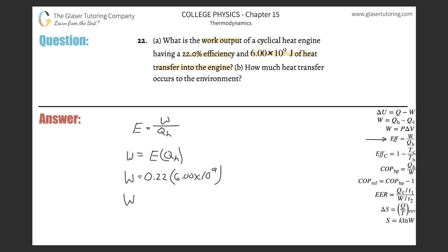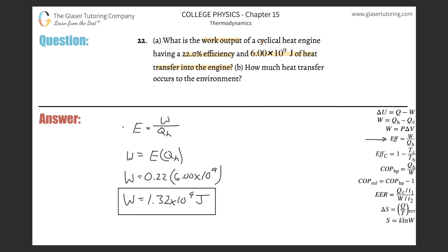So we're going to get a work output of 0.22 times 6 times 10 to the 9th — that's 22% of that value. So that's about 1.32 times 10 to the 9th joules. That would be the work output of this engine. So that takes care of letter A.